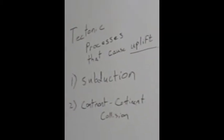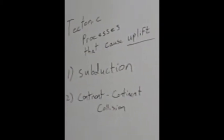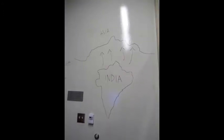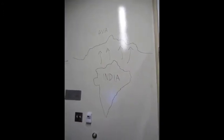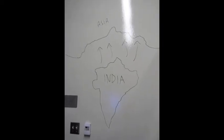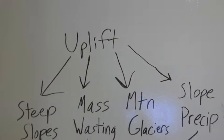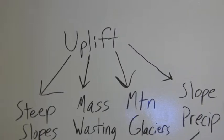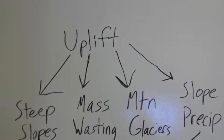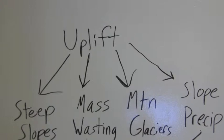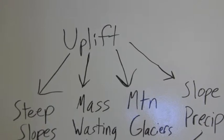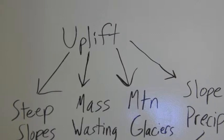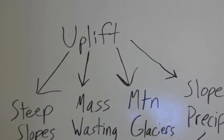The second tectonic process that causes uplift is continent-continent collision. This can be observed as India collided with Asia to create the Tibetan Plateau. Uplift creates steep slopes which create more mass wasting. The increased elevation also leads to mountain glaciers and orographic precipitation. All of this increases the rate at which the rocks are being fragmented.